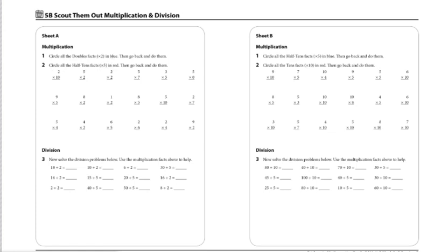Then, with a red colored pencil, I'd go back through and circle all the times 5 facts. Some of the problems, like 5 times 2, will have two circles around it, and that's okay.